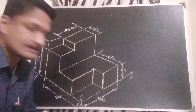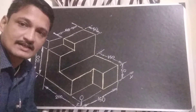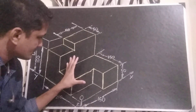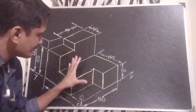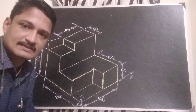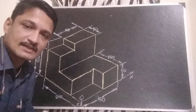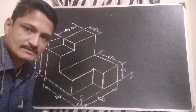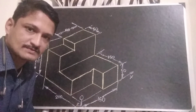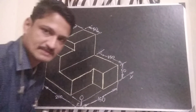This is multi view projection. We have already been given an isometric figure, and from this figure we have to draw the orthographic views such as front view, top view and side views. This type of conversion is known as multi view projection.